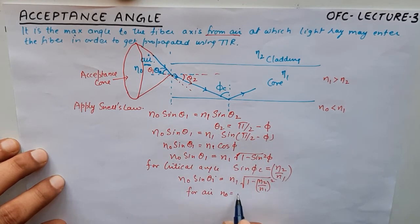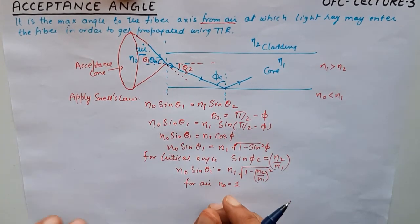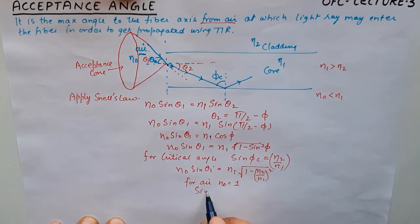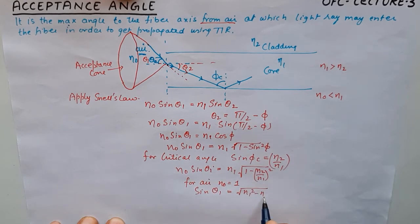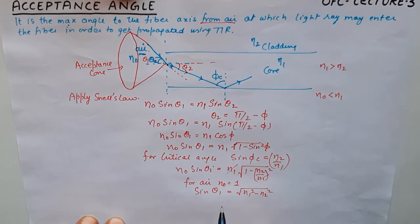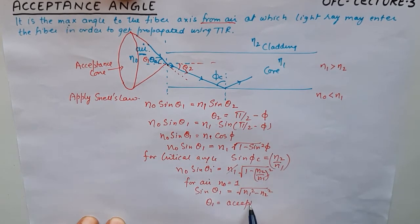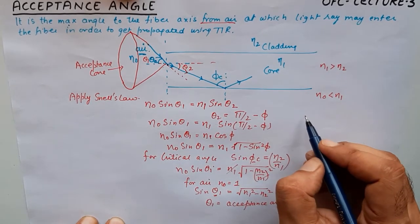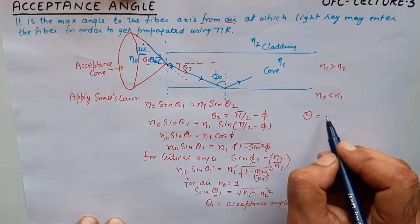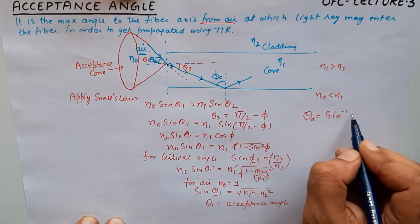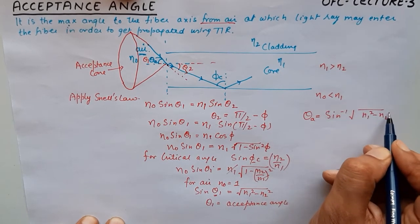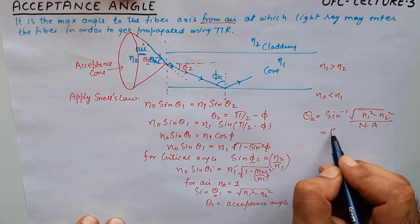Now, considering eta naught equal to 1 (air), we get sine of theta1 equals the square root of (eta1 squared minus eta2 squared), since the eta1 terms cancel. This theta1 is nothing but the acceptance angle, because it satisfies the condition for the critical angle. So the acceptance angle becomes sin inverse of the square root of (eta1 squared minus eta2 squared).